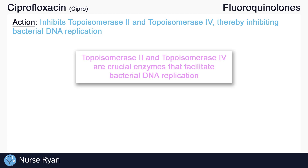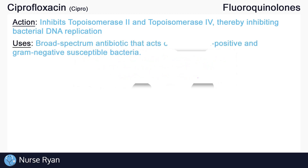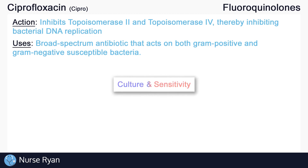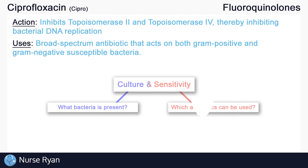So what type of bacteria can fluoroquinolones like ciprofloxacin work on? Ciprofloxacin is a broad-spectrum antibiotic, which means that it can act on a wide variety of bacterial infections. This includes both gram-positive and gram-negative susceptible bacteria. To find out which bacteria are susceptible to Cipro, a culture and sensitivity test should be performed. The culture test tells us what bacteria is present in a given sample, and the sensitivity test tells us which antibiotics will likely work best to treat the infection.